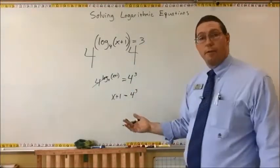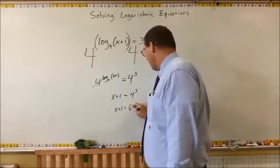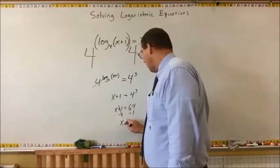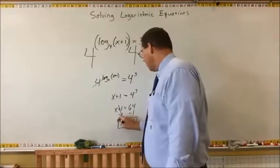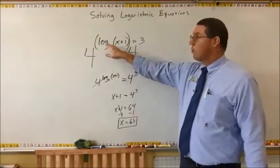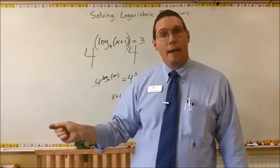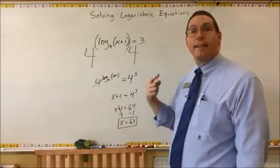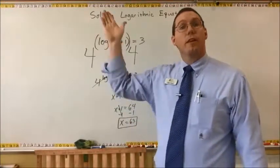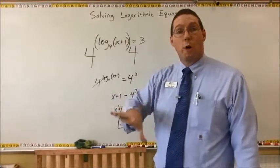Now, 4 to the 3rd power is 64. So we have x plus 1 is equal to 64, then we subtract 1 from both sides and we get x is equal to 63. Basically, the way we solve logarithmic equations is by applying an exponential base equal to the base of the logarithm, which results in the canceling of the logarithm and the exponential base on one side.